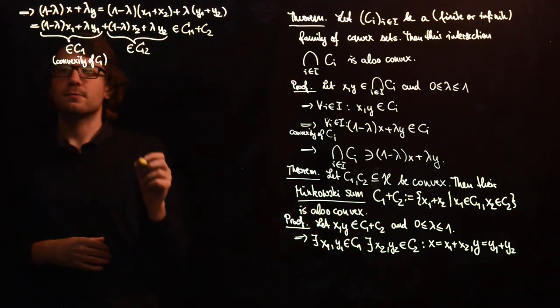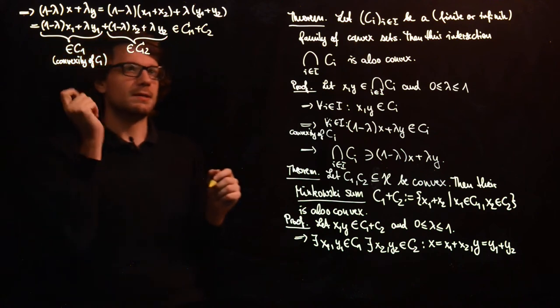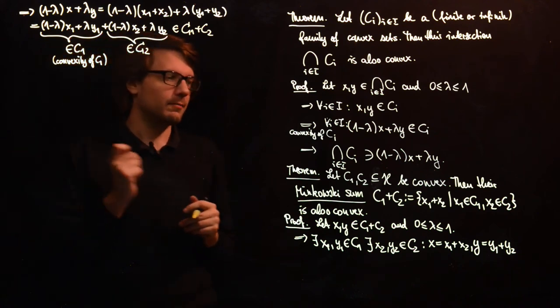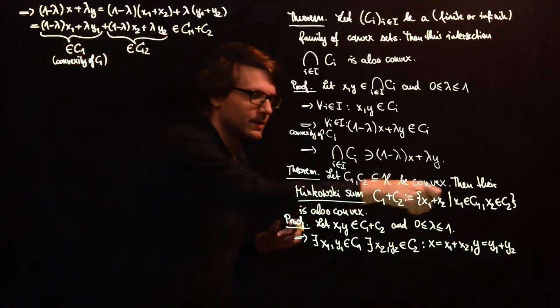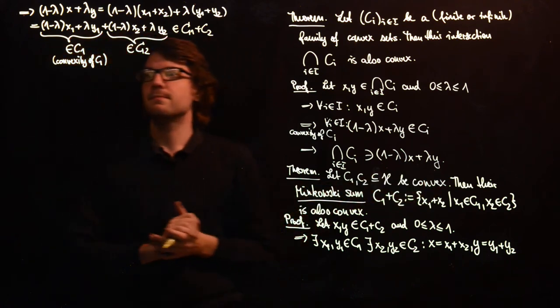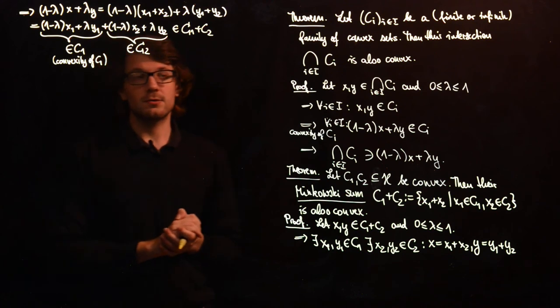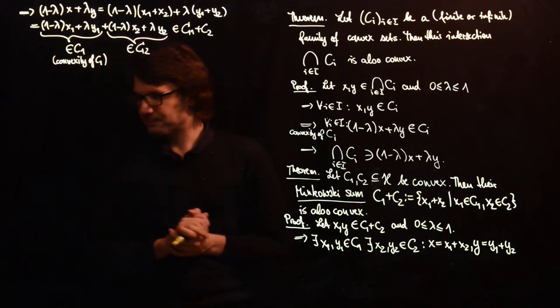Since x and y were arbitrary elements of the Minkowski sum, this concludes our proof that the Minkowski sum of two convex sets is convex.